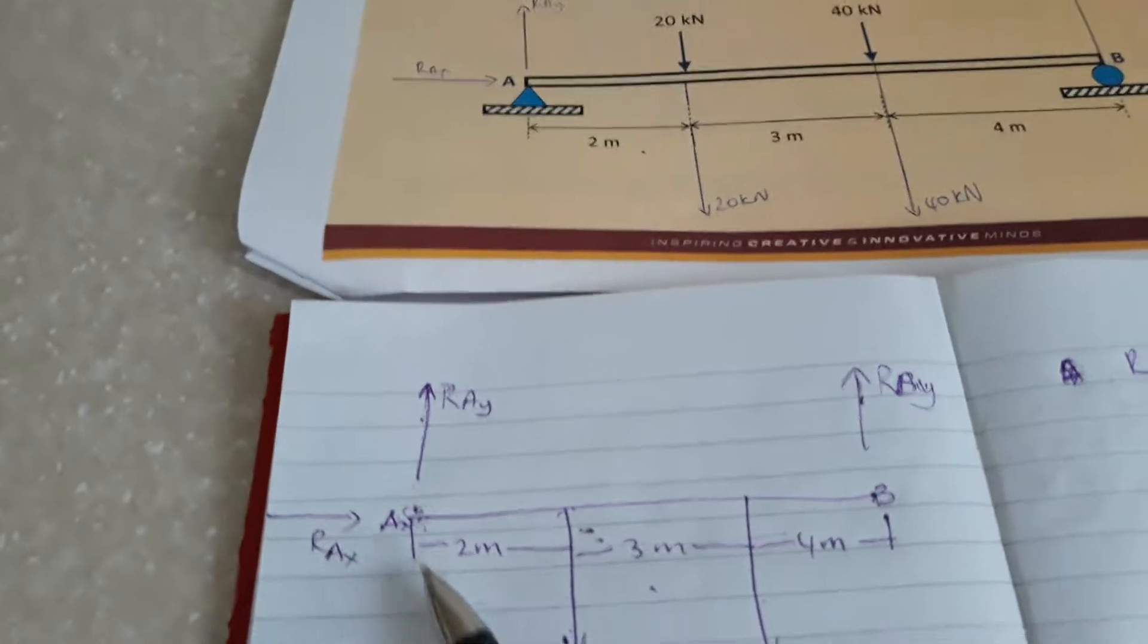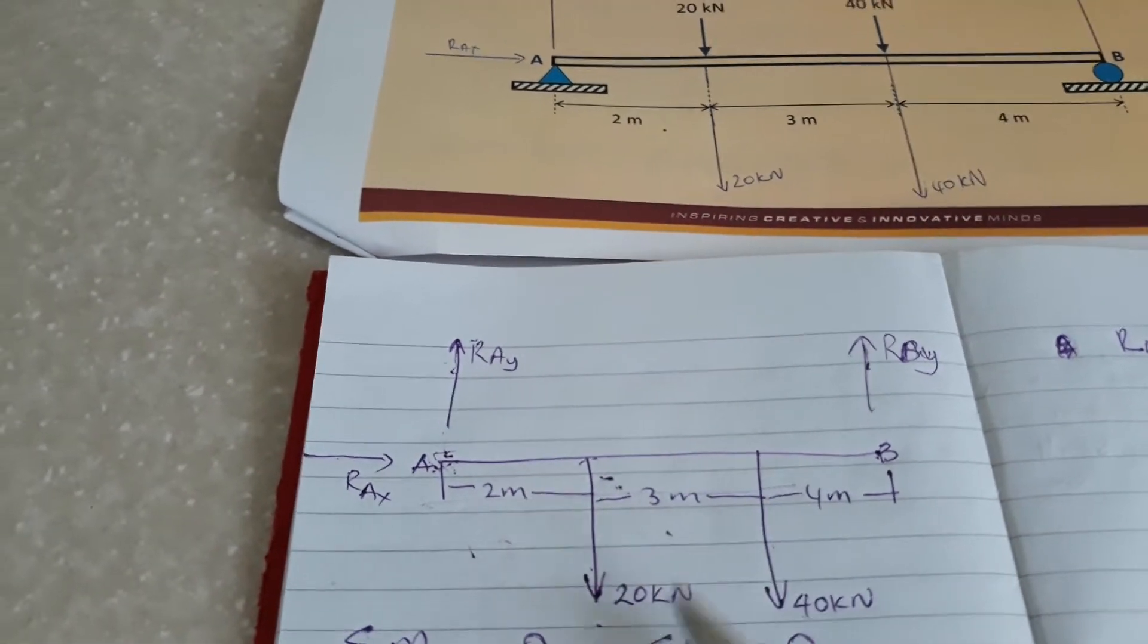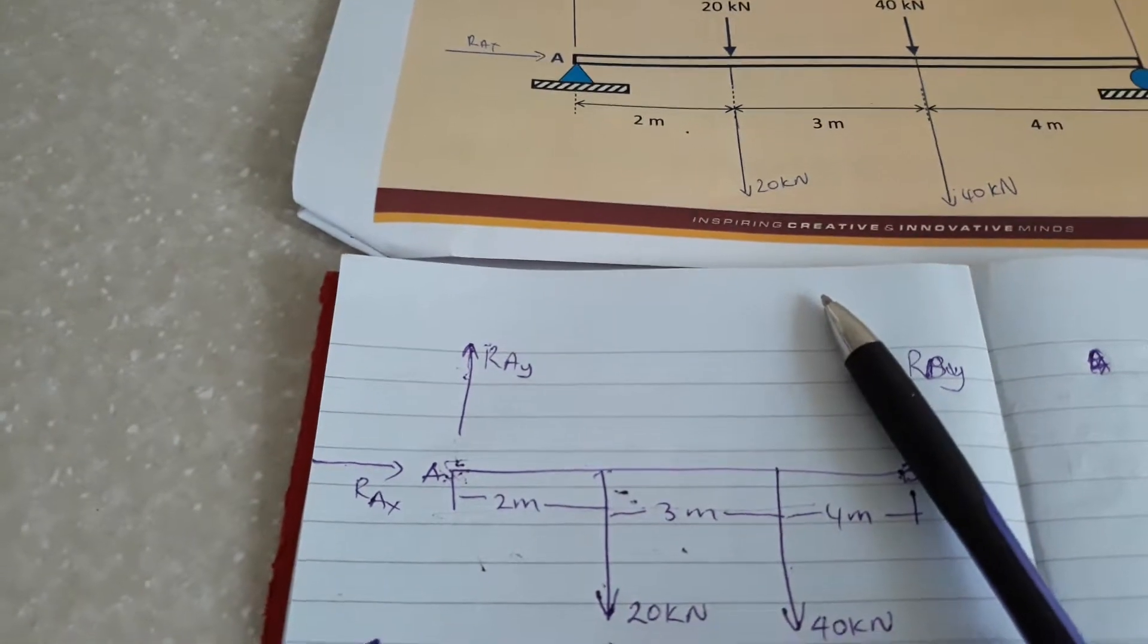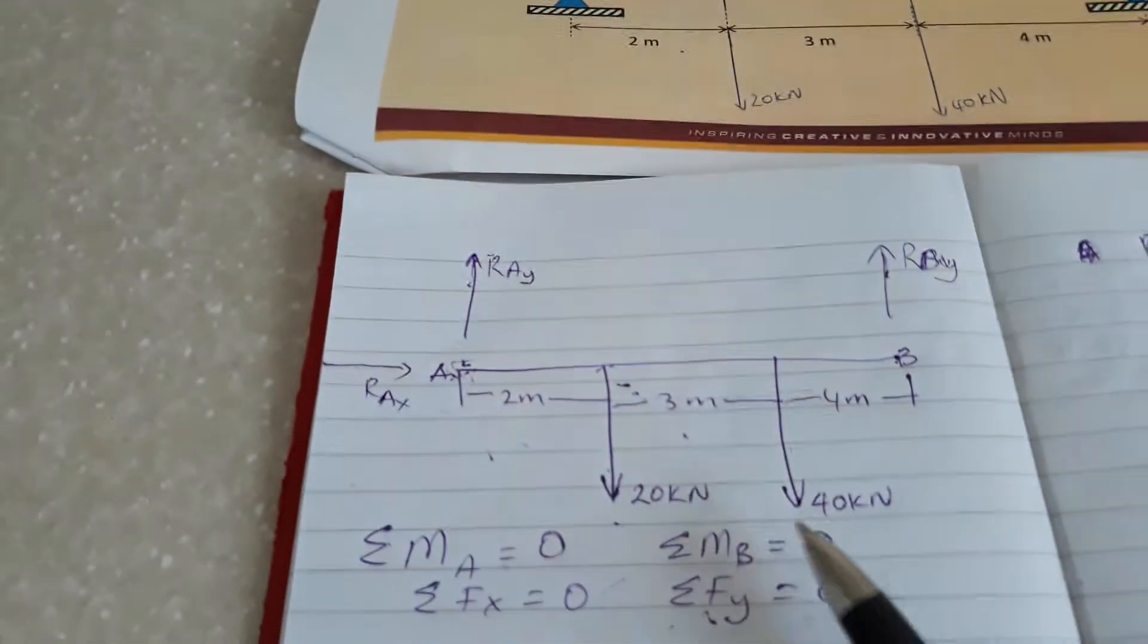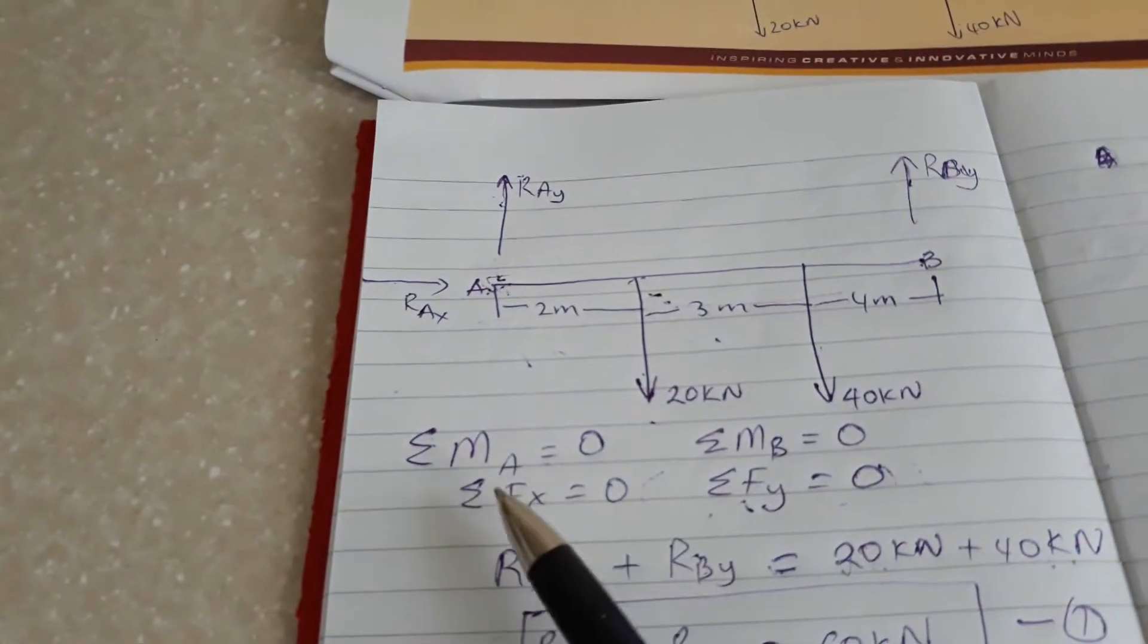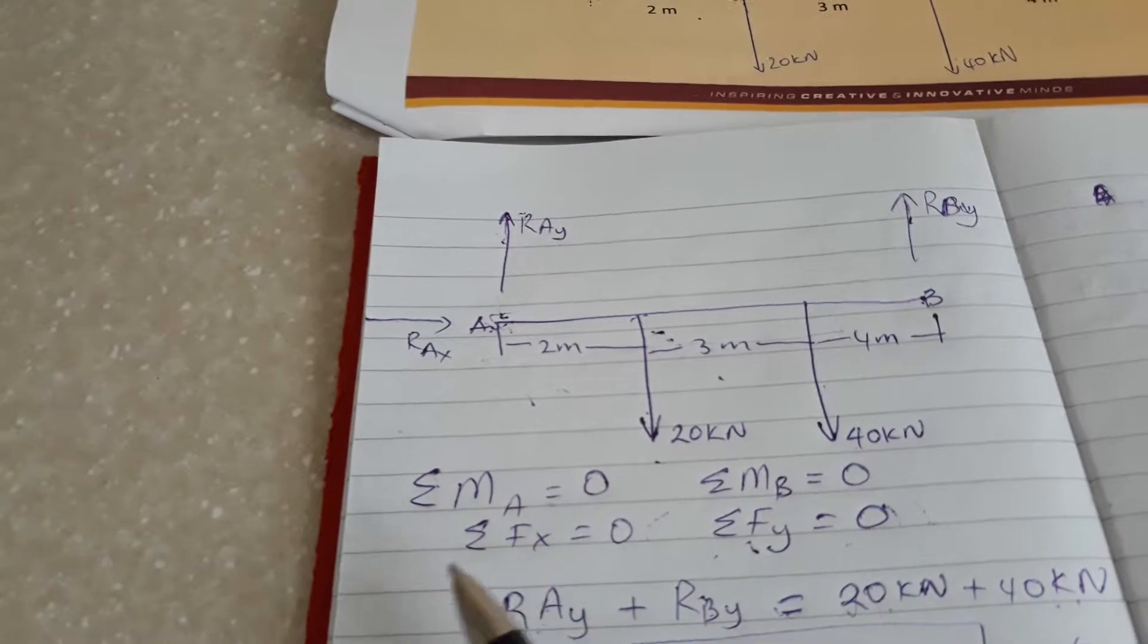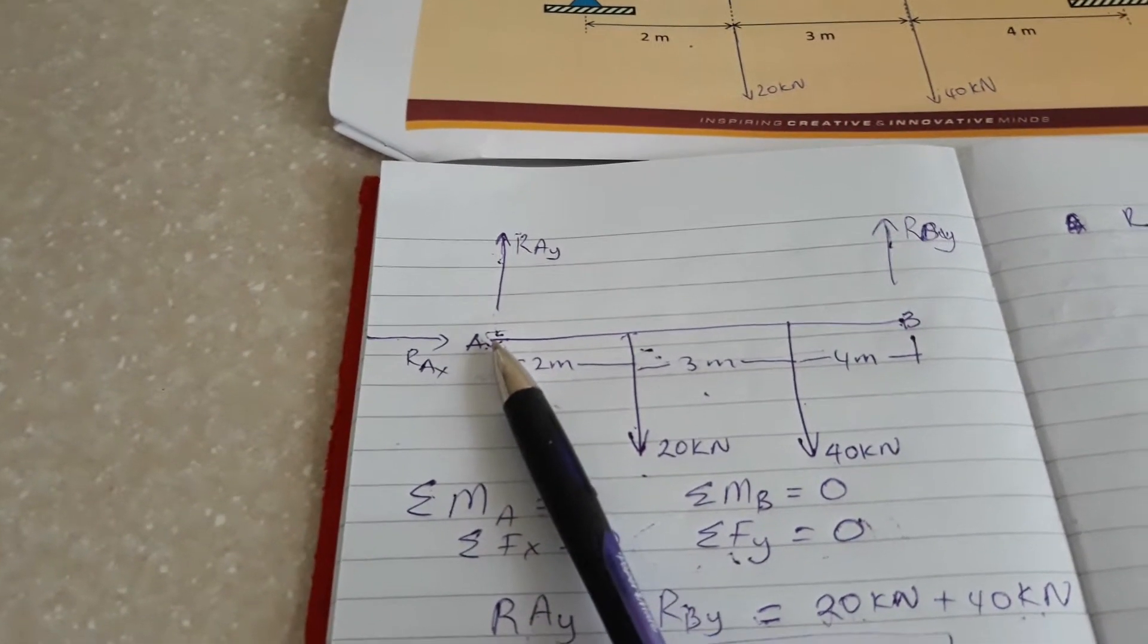We know that for a beam which is supported in this way, the sum of forces in the y direction is zero, sum of forces in the x direction is zero, moments at point A is zero, and moment at point B is zero.